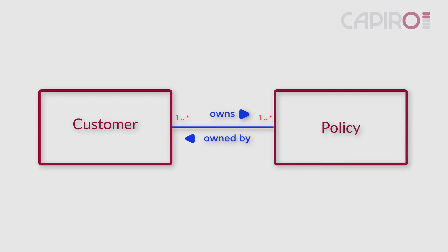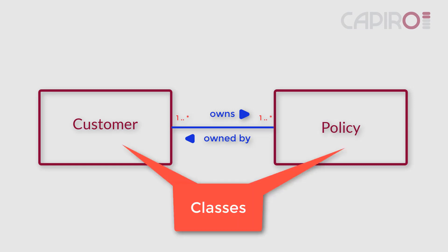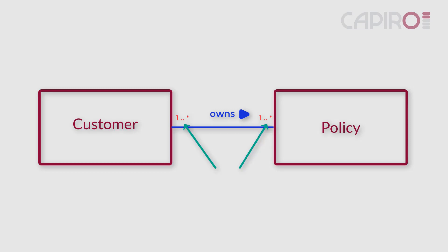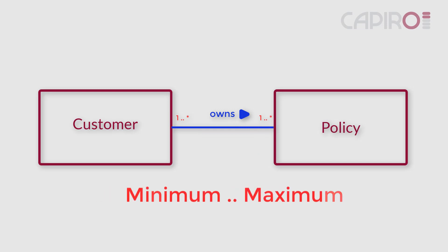This is because the rectangles on the model represent classes of things — it's a sort of blueprint that describes all the policies and all the customers. The 1..* is written at the policy end of the association. This often confuses people when they start learning how to create data models. Adornments such as the 1..* are referred to as the multiplicity of the association. The multiplicity is always written in the form minimum..maximum.